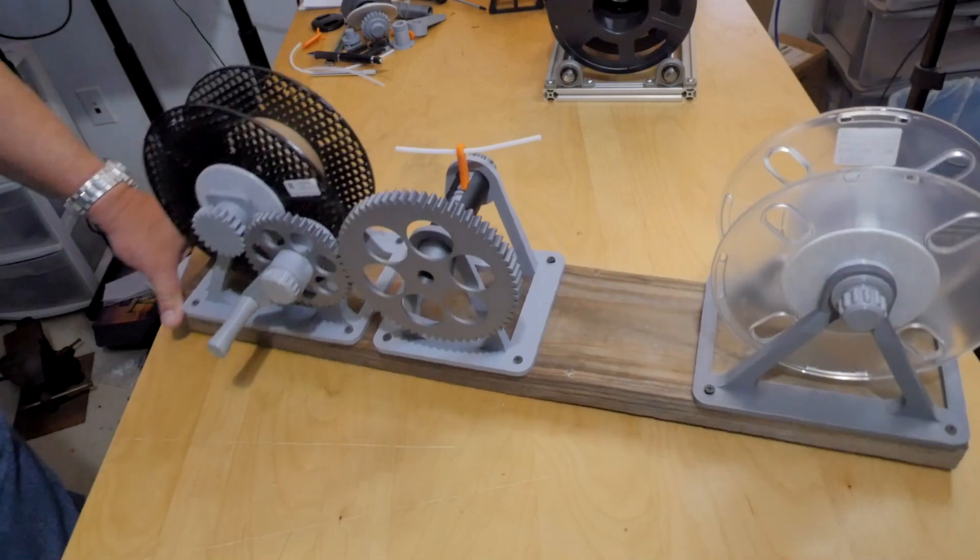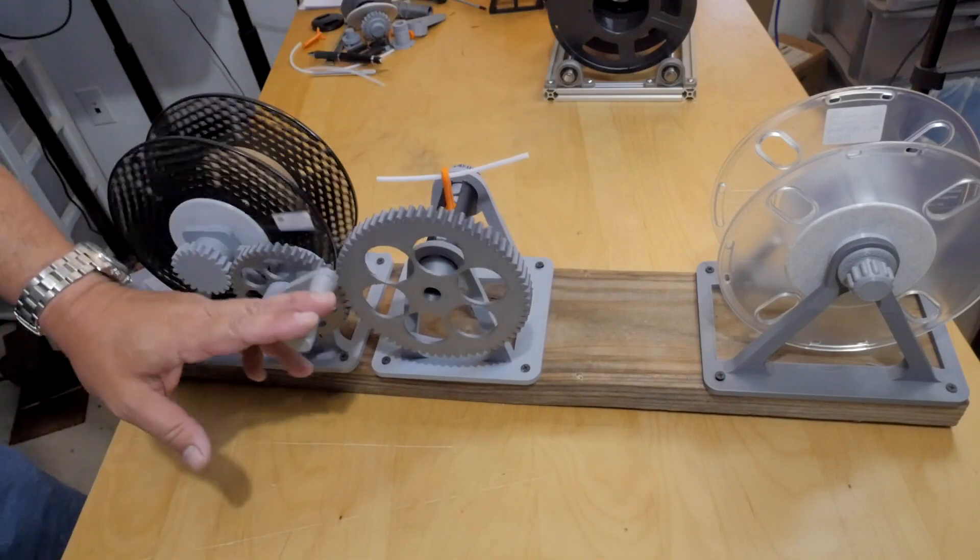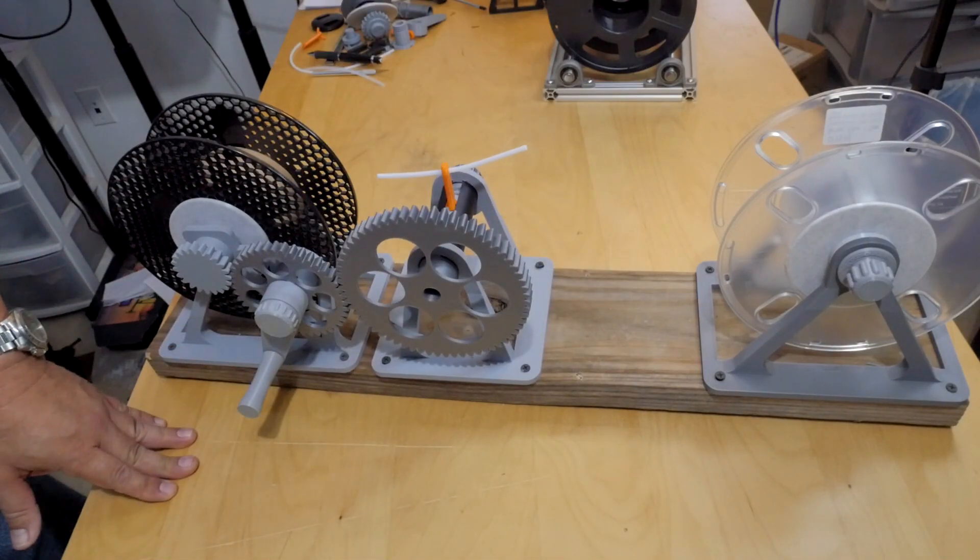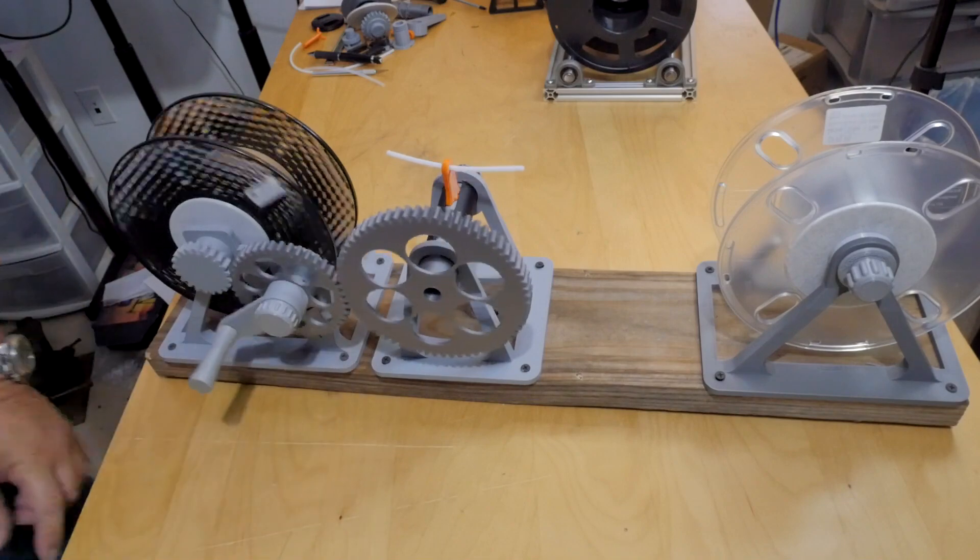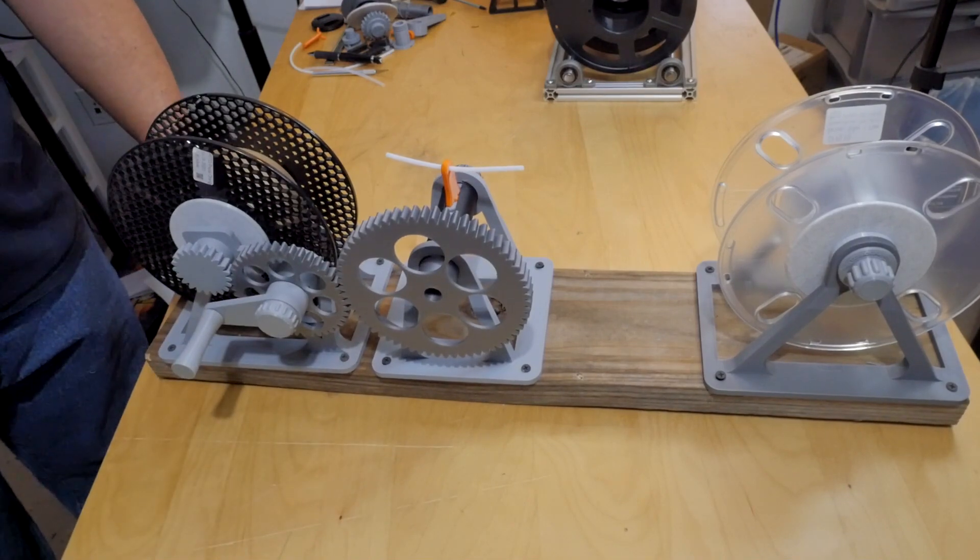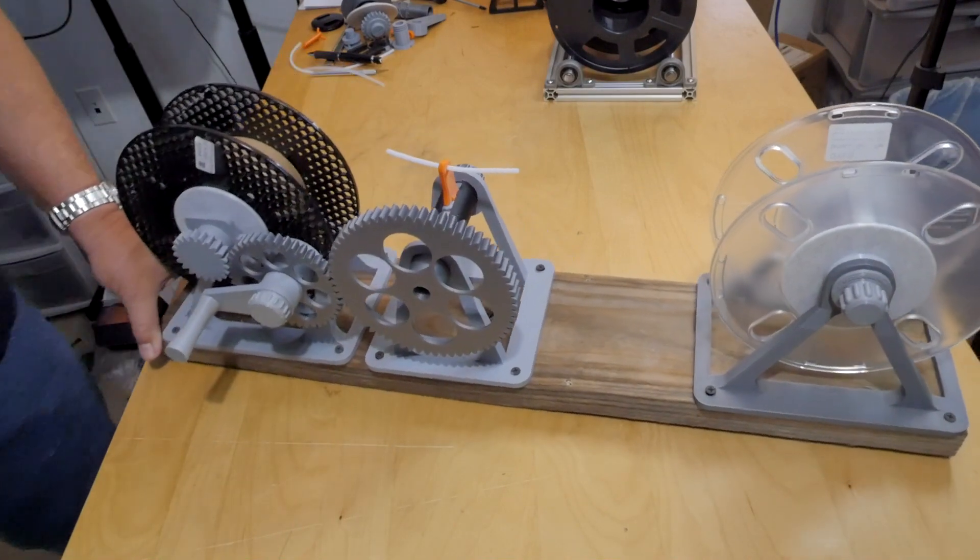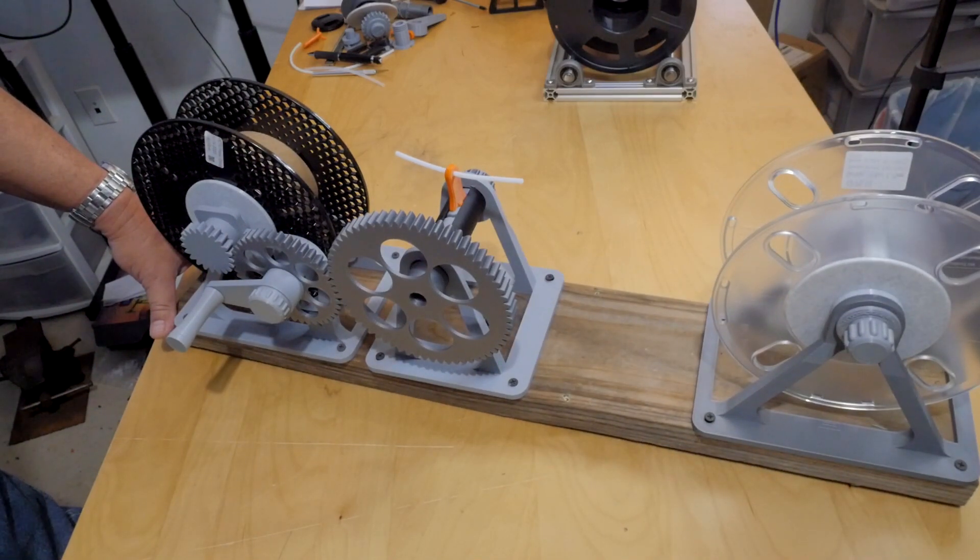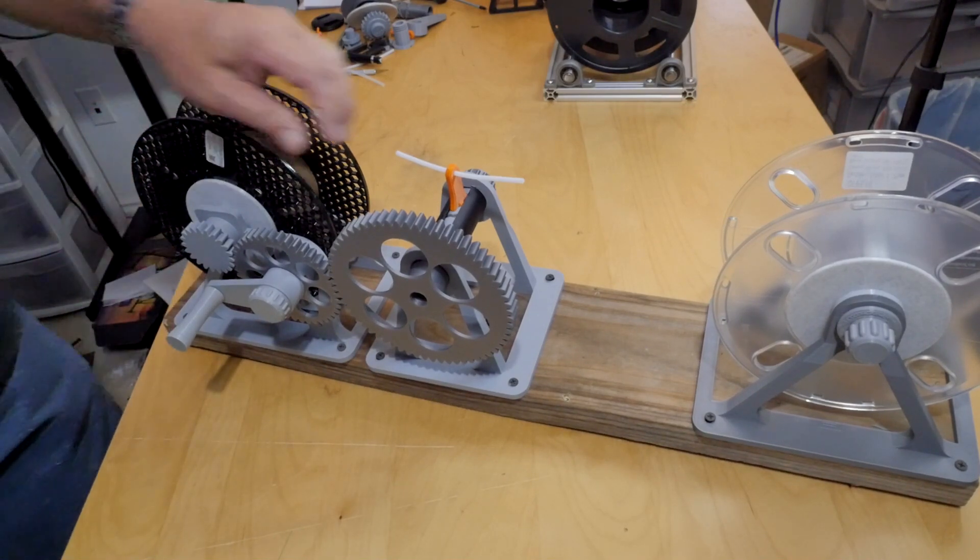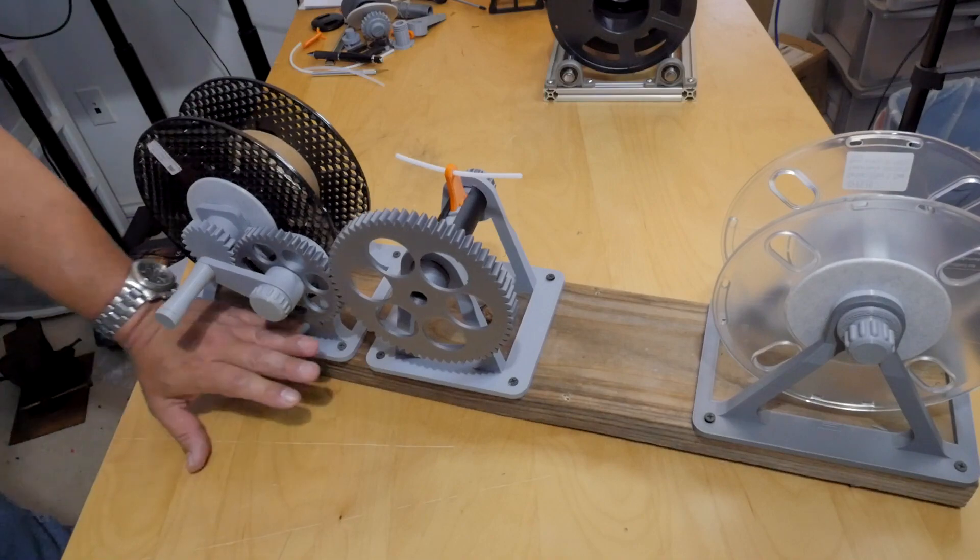All this stuff is all 3D printed, and this is the first version of it. With this one I did use PLA just for the ease of printing and the lower cost filament while I develop everything. But now that it's finished, I'll probably switch over and use either maybe a nylon carbon fiber or PETG carbon fiber, just something a little more sturdy. You can see it kind of flexes a little bit.